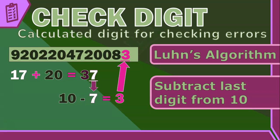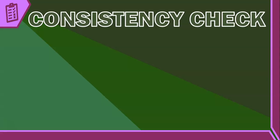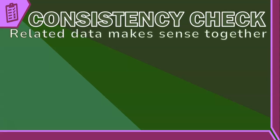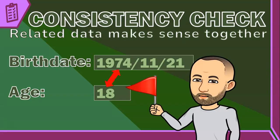Some systems use a consistency check, which ensures that related data fields make sense together. For example, if you enter a birth date that makes you 50 years old but you claim to be 18, the system will flag that inconsistency. It's all about making sure the data lines up logically.